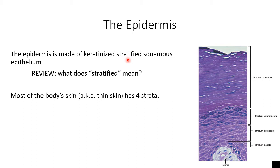When we talk about keratinized stratified squamous epithelium, we organize those layers of cells into things called strata. Most of your skin — all of the places that have thin skin — have cells organized into four different strata. Starting superficially, we have stratum corneum, then stratum granulosum, which is dark with spots, then stratum spinosum where the cells have little spines attaching them to each other, and finally a single row of cells at the very bottom called stratum basale.